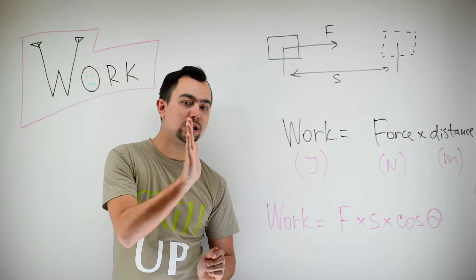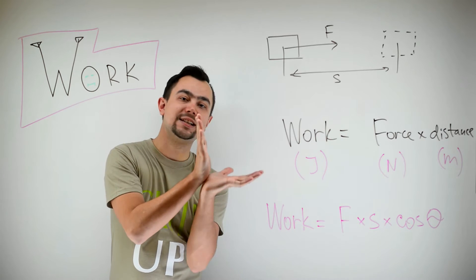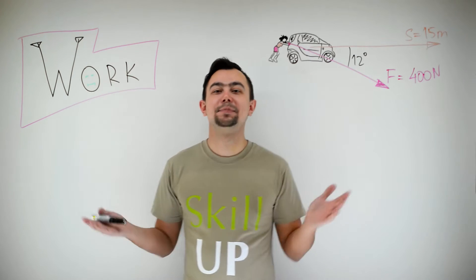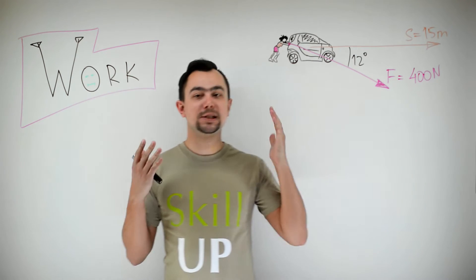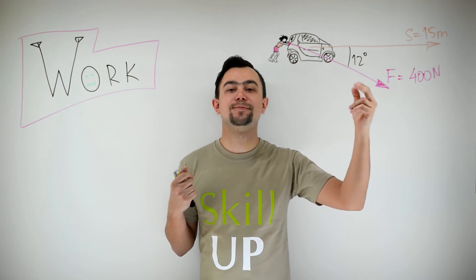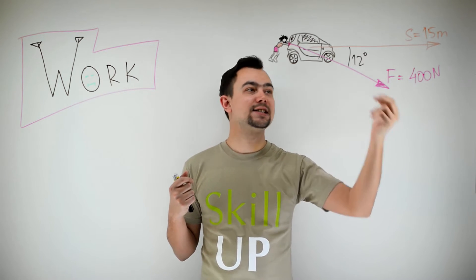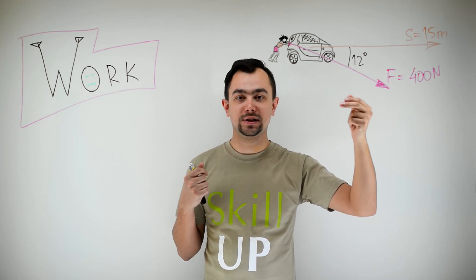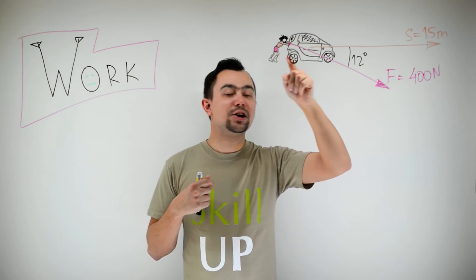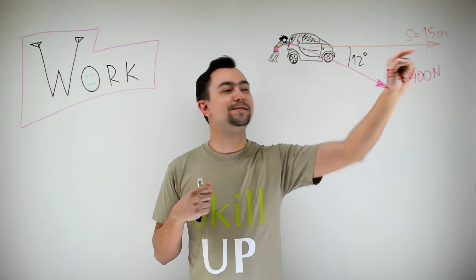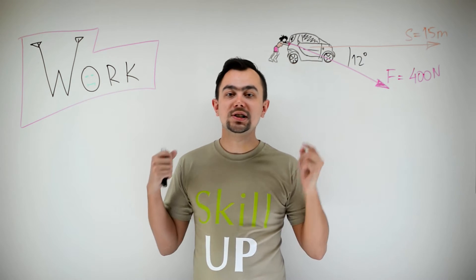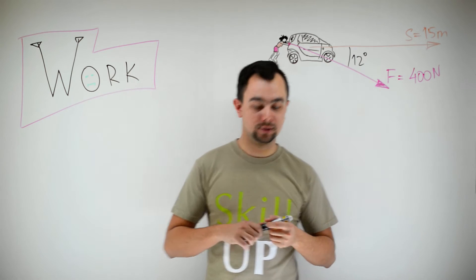A simple example: a woman is pushing her car and she's applying a force of 400 newtons at an angle of 12 degrees. This diagram is not to scale. The car is moving 15 meters. What is the work done by the woman?